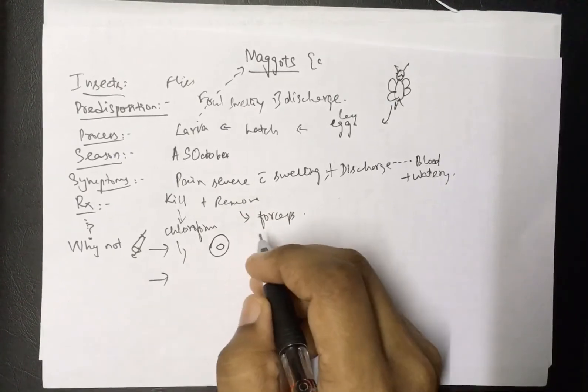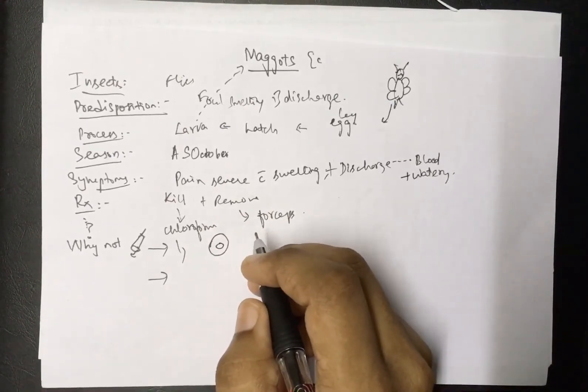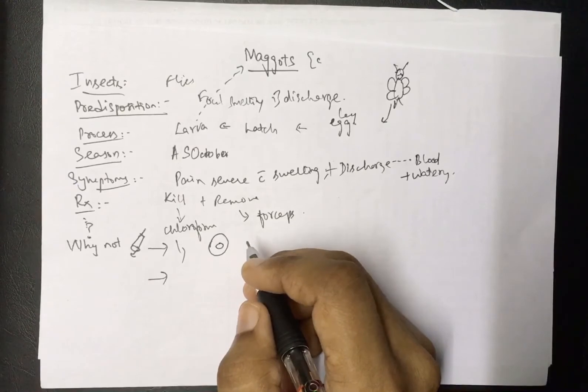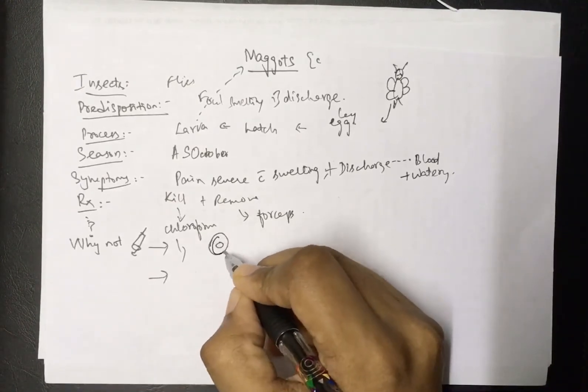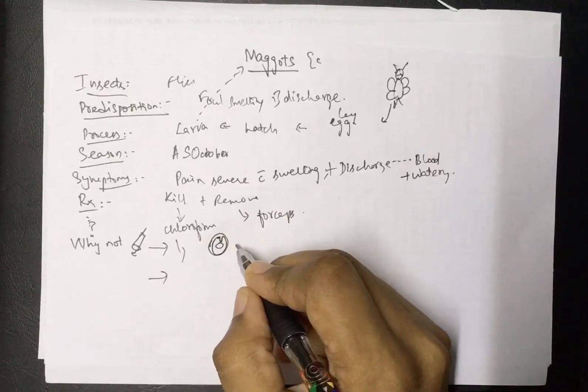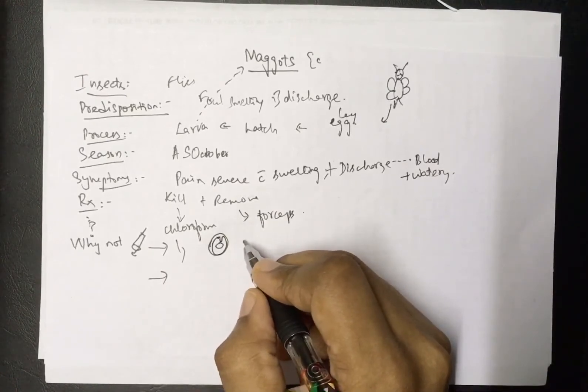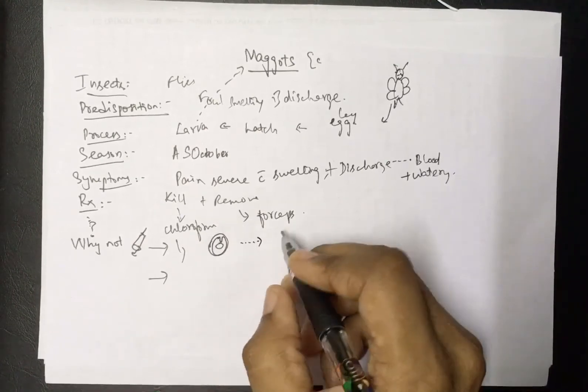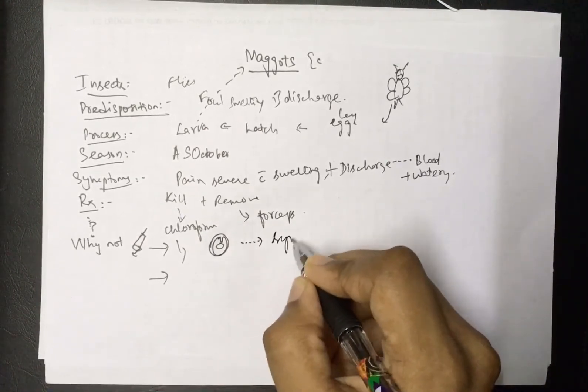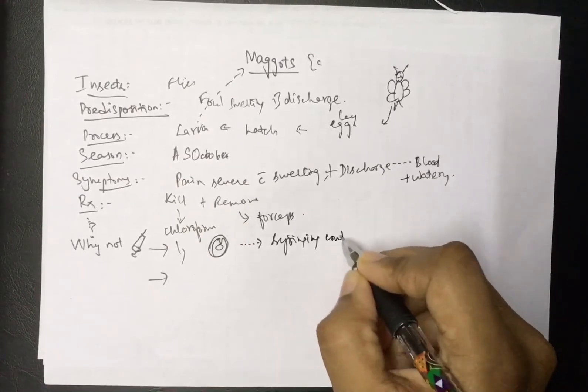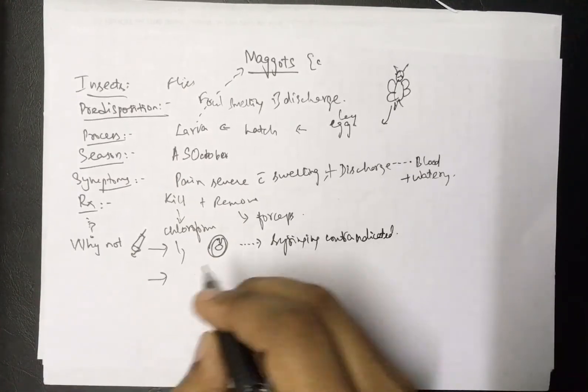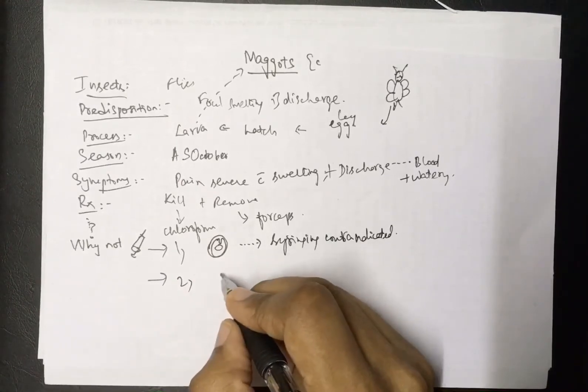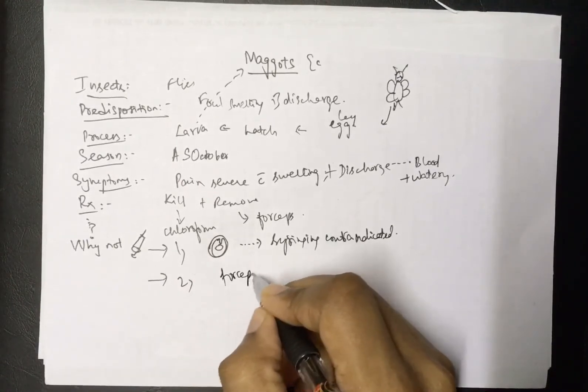So the tympanic membrane might have a perforation. Also, syringing is contraindicated when the ear drum is perforated. We are not going to do syringing - syringing is contraindicated in a perforated ear drum. The other reason is that using forceps is pretty easy.